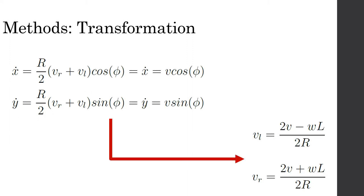If we set the model's kinematics equal to each other, we get relationships for the left and right wheel velocities.